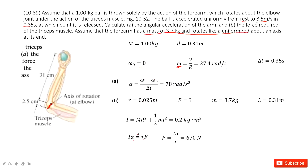Now, alpha is given and R is given, so we need to find I. We assume the forearm as a uniform rod, so I has two parts. The first part is the ball: m times d squared. The second part is the rod rotating at one end: one-third m l squared. Now you can find I, you have alpha, and you have the small r, so very easily you can get the force applied by the muscle. Thank you.